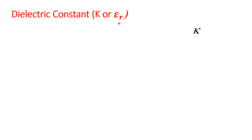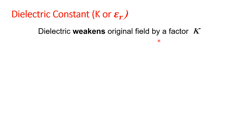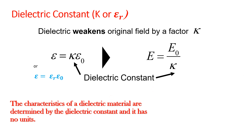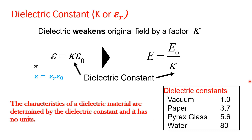Now we understand what is the dielectric constant and its effect on capacitance. A dielectric weakens the electric field by a factor K, so epsilon equal to K times epsilon_0, or epsilon equal to epsilon_r times epsilon_0, where K or epsilon_r is the dielectric constant. Thus E equal to E_naught/K. Dielectric constants are dimensionless. For vacuum it is approximately 1, for paper it is 3.7, for Pyrex glass it is 5.6, and for water it is approximately 80.